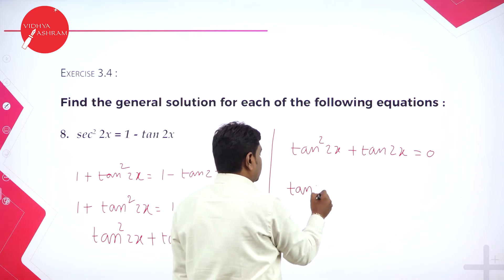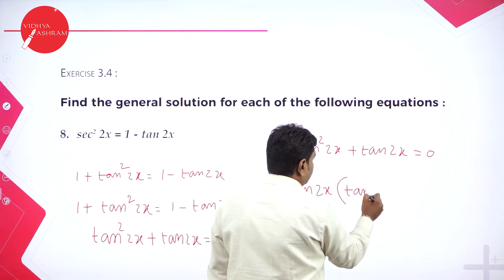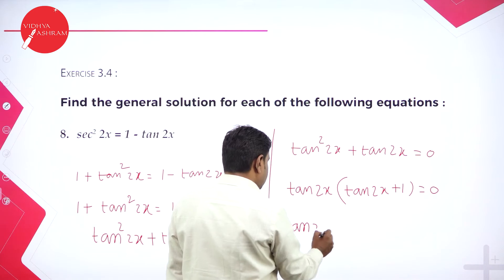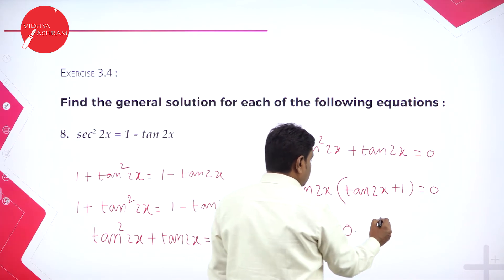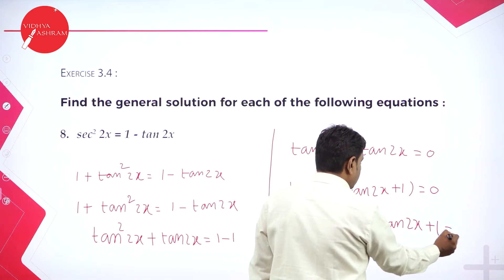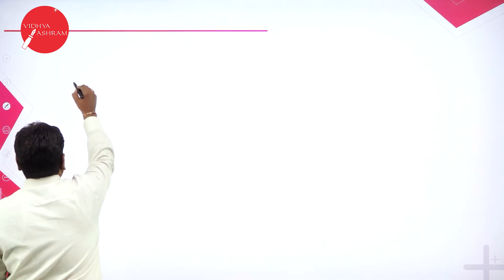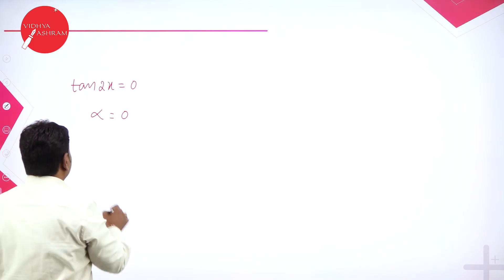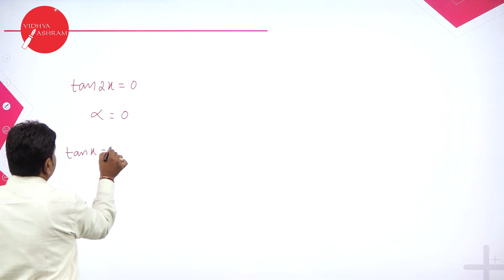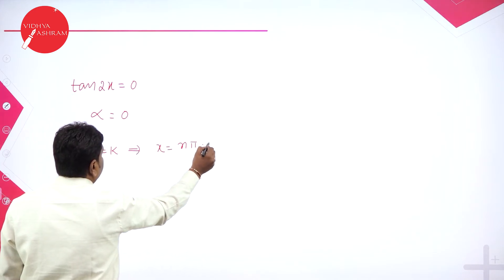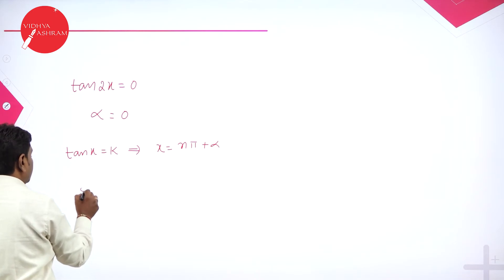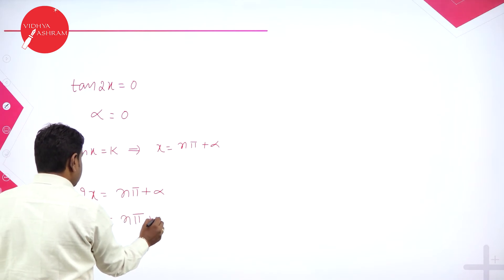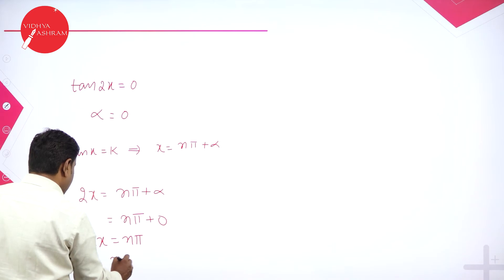In these two terms take tan 2x common. It becomes tan 2x times (tan 2x plus 1) equals 0. Now we have two terms. First: tan 2x equals 0. Alpha in tan table gives 0. The general solution for tan x equal to k is x equals n pi plus alpha. For tan 2x: 2x equals n pi plus 0, so x equals n pi by 2.